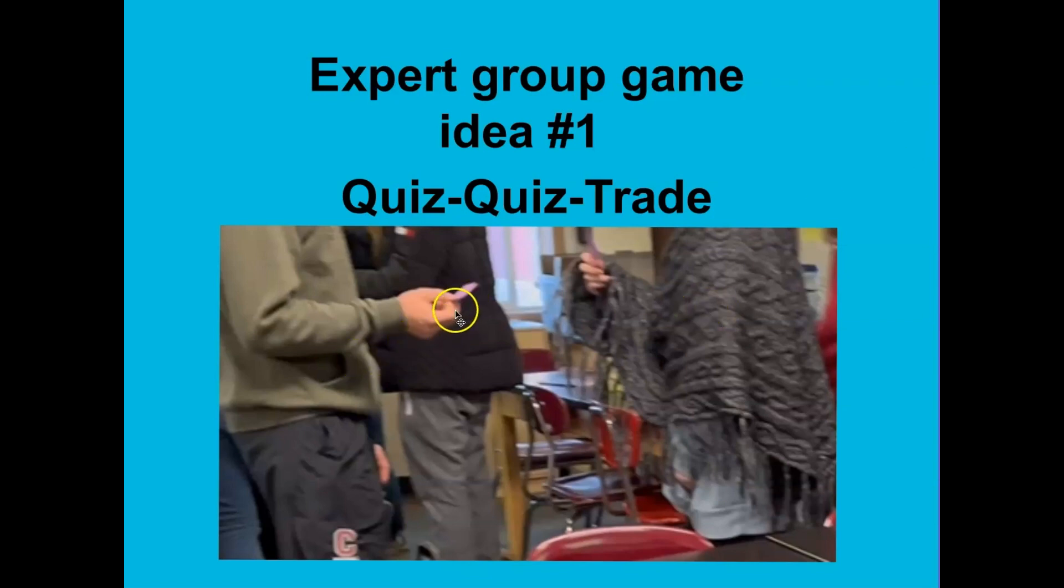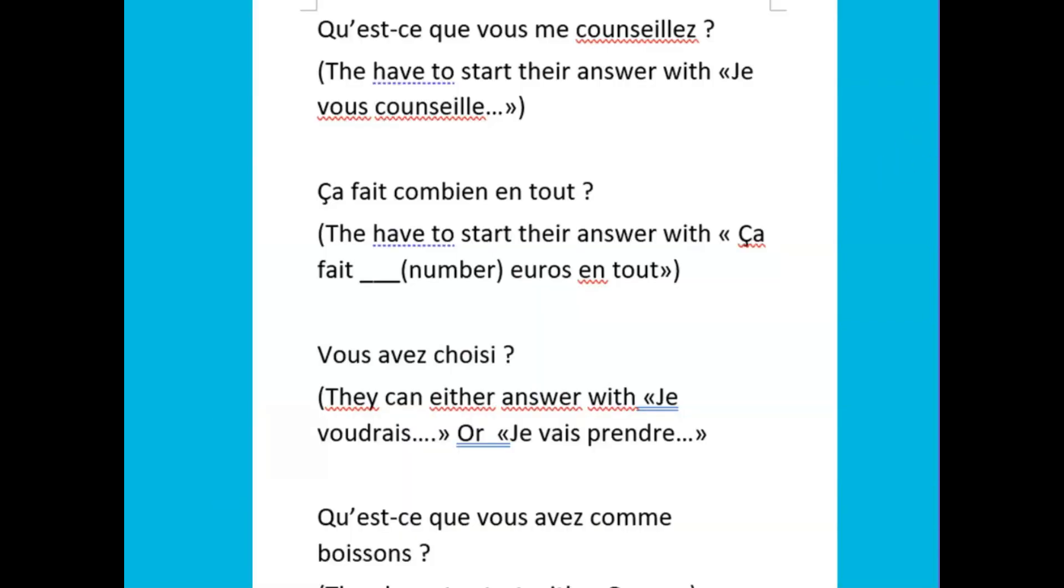So in quiz, quiz, trade, you've got the two people. Well, everyone gets a card. I'll explain it more in detail, but you see each one has a card in their hand. They're reading off the card. They're asking each other the question on the card, and then they're going to trade. And I will show you how this works.